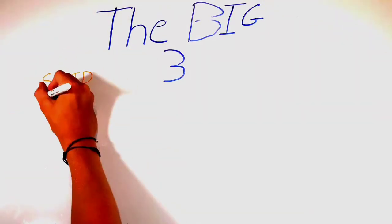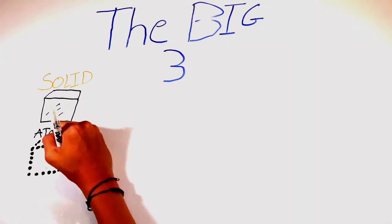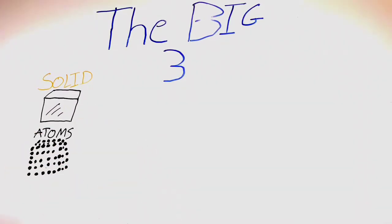Let's start off with the big three that everyone should know: solid, liquid, and gas. A solid has a fixed volume where the atoms have a fixed position, such as ice.